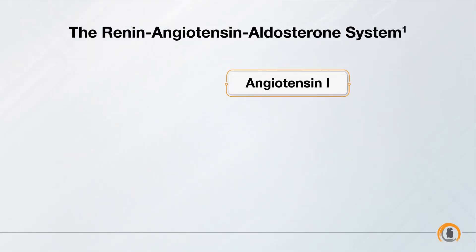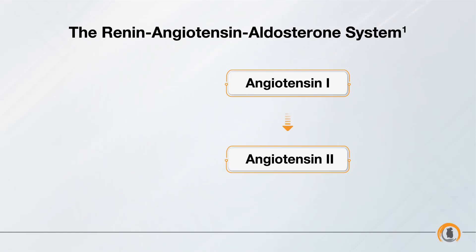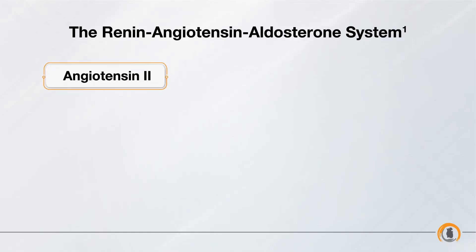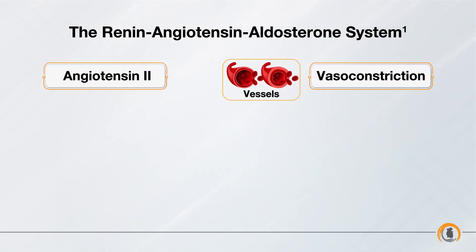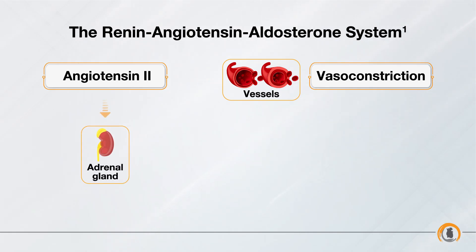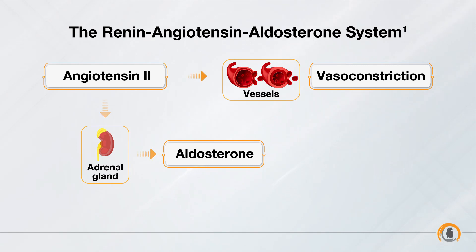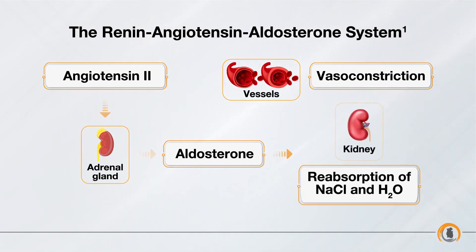Angiotensin 1 is then converted to angiotensin 2 by the angiotensin-converting enzyme, or ACE. Angiotensin 2 acts on blood vessels to cause vasoconstriction. It also acts on the adrenal cortex and stimulates the release of aldosterone, a steroid hormone that causes an increase in sodium reabsorption in the kidneys.